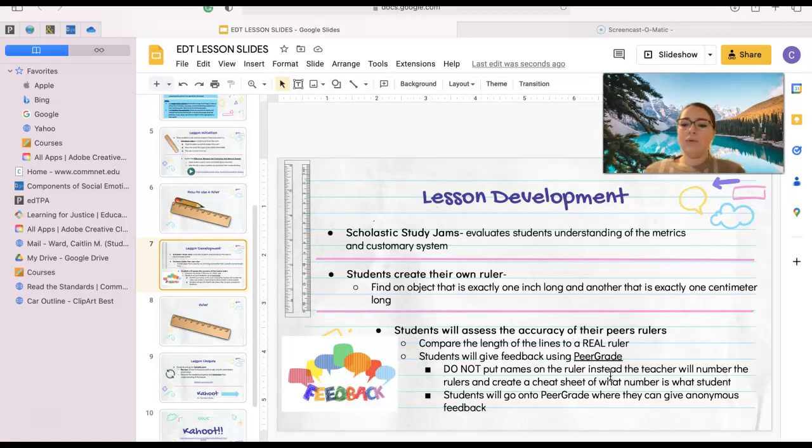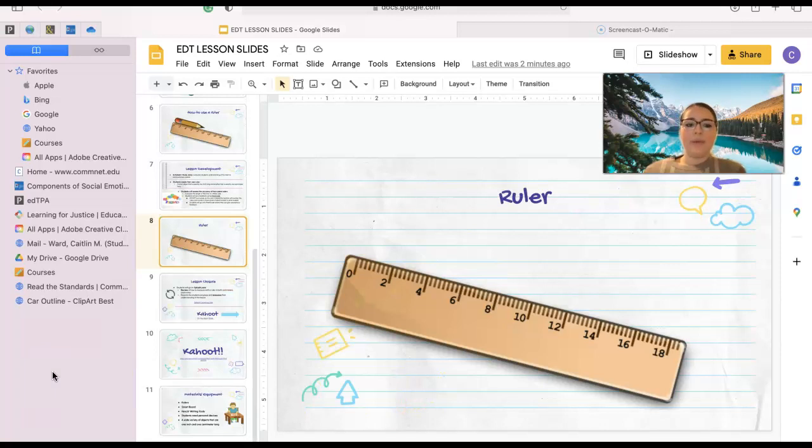Instead, when you are finished with your ruler, you brought it up to me and I put a number on it and created a little cheat sheet with your name and a number. So I'm going to pass out the rulers, we can go on to Peer Grade, and we can anonymously give feedback to our peers on their ruler - whether it's accurate, not accurate, things like that.